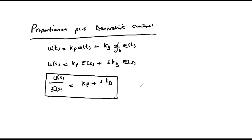We proceed to assess its performance on different types of systems. So far we've noted that one of the issues we've not been able to handle is stability, and that with integral control action we're able to sort out steady state performance. Now if we subject this control action onto a type 0 first order system...